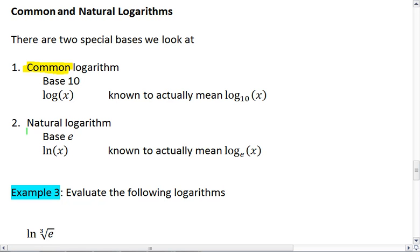The natural logarithm, which is written as ln, is understood to be a log with a base of e. Thus, the common log and the natural log are two specific examples of logarithms with special bases. Common log is just log base 10. Natural log is a log base e.